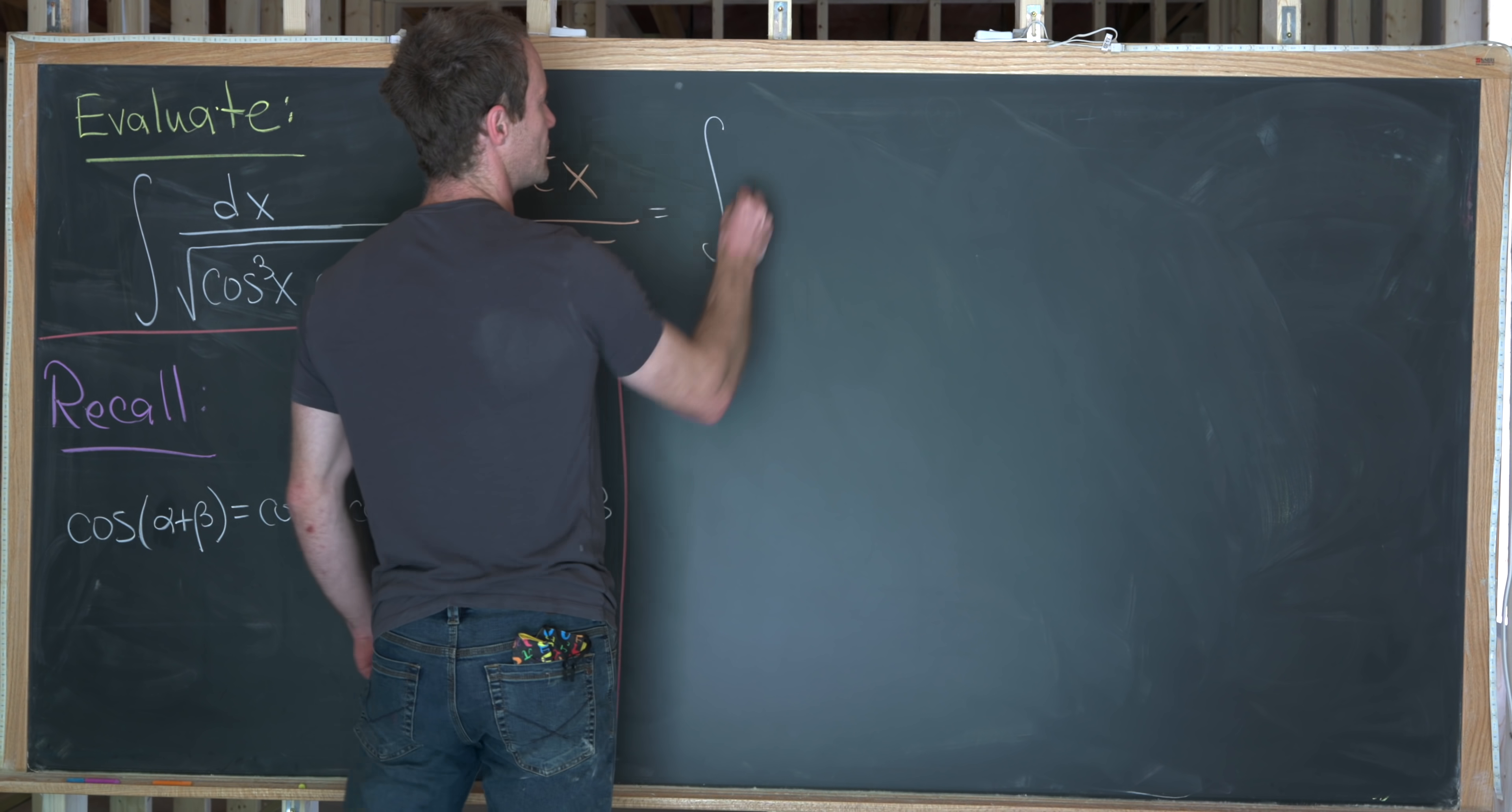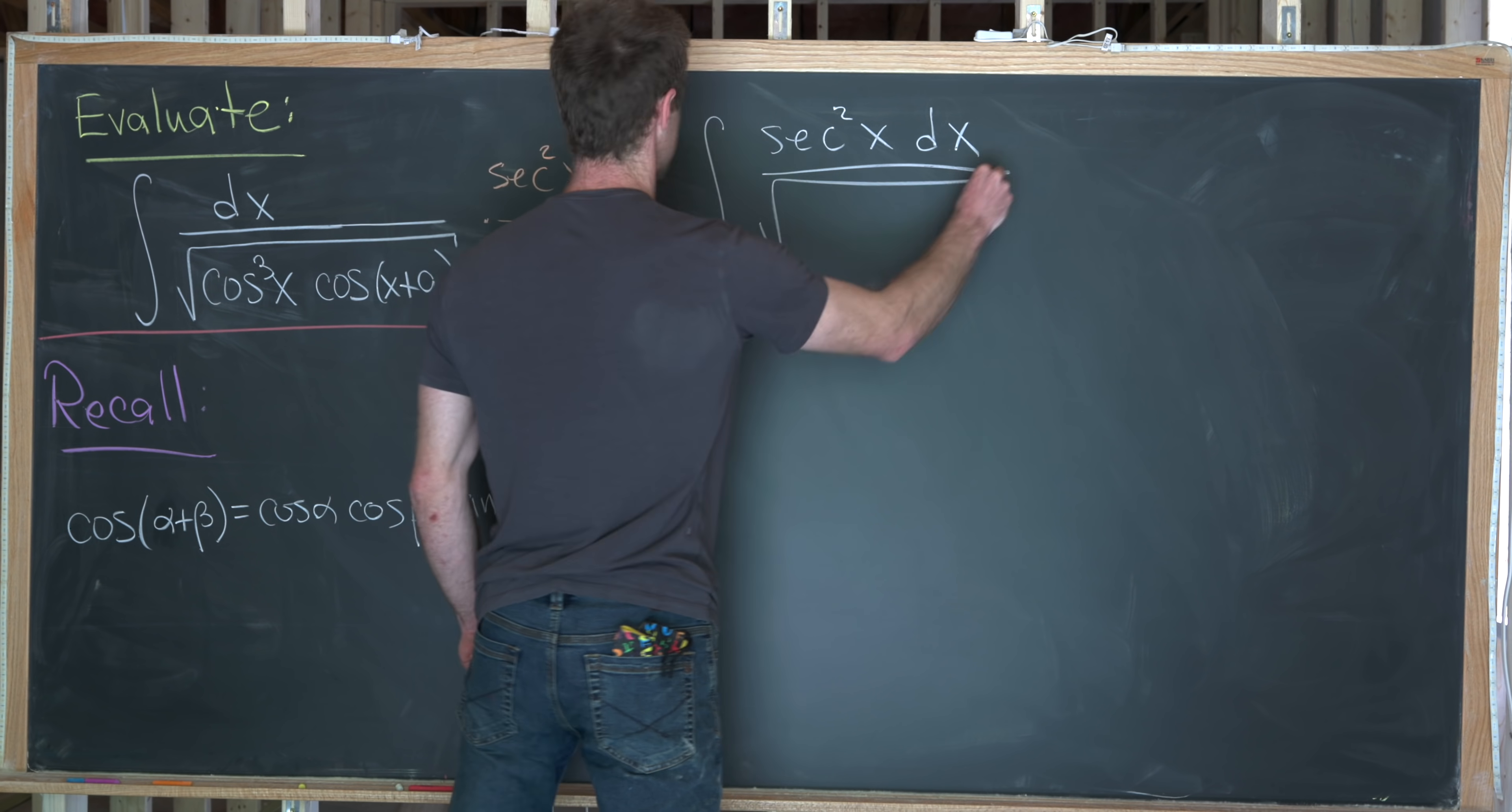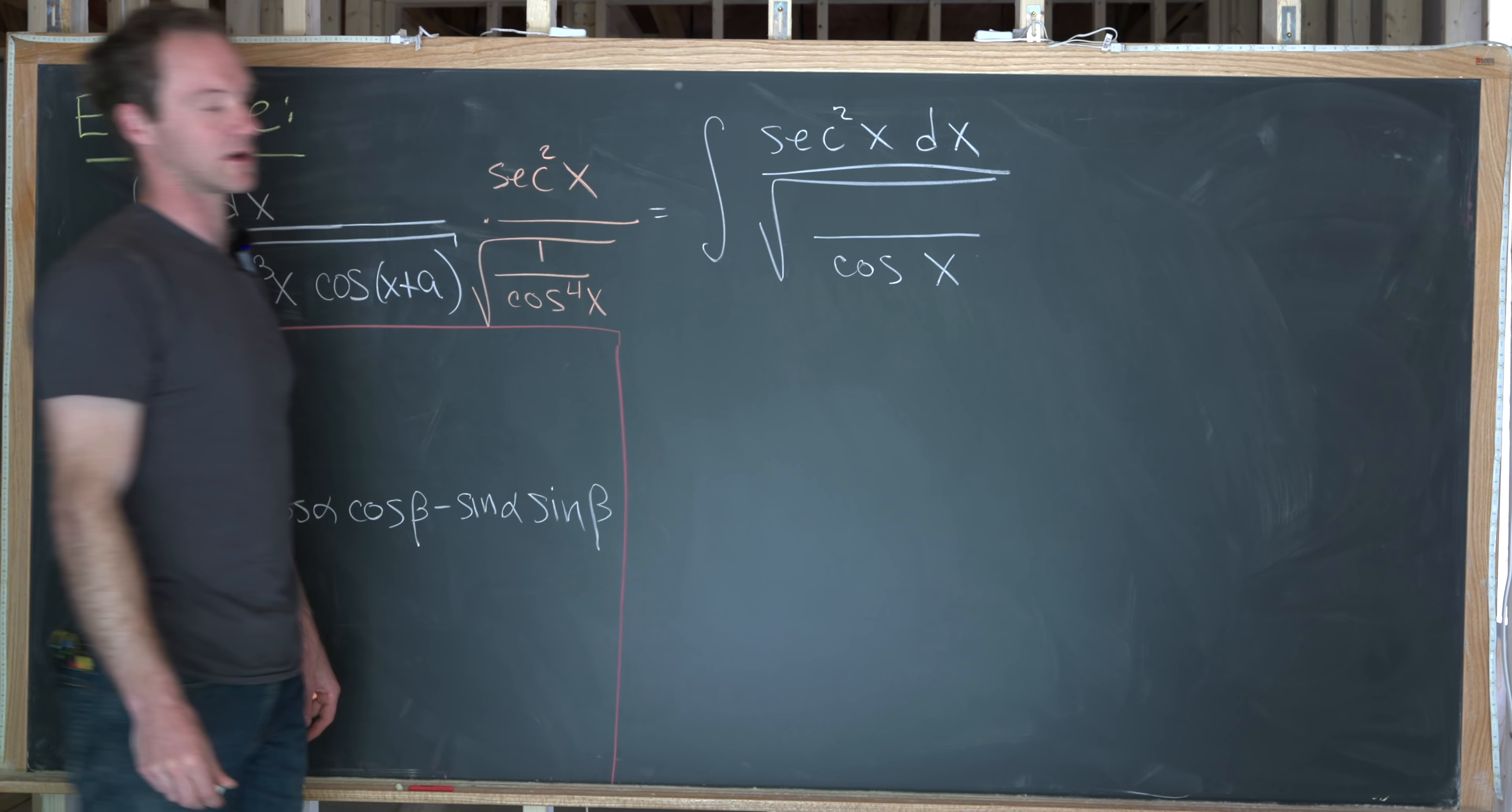So let's see what that gives me. In the numerator, I'll have secant squared of x dx. And then in the denominator, I can bring this one over cosine to the fourth inside. That's going to give me the square root of, well, I've got cosine cubed over cosine to the fourth. So that means I'll have a cosine of x type term.